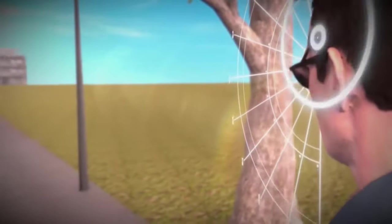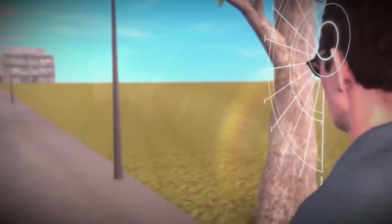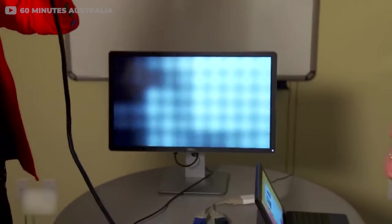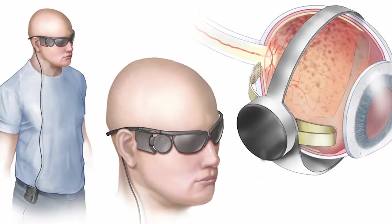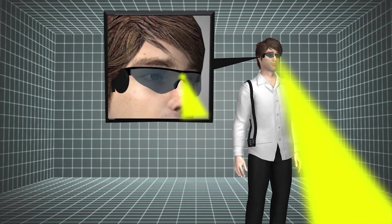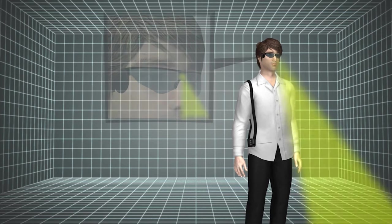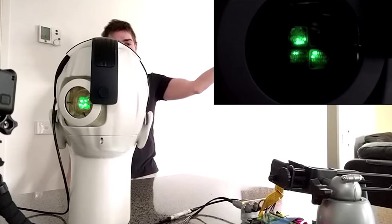At present, the bionic eye will not restore complete vision. Instead, it will allow someone who's blind the ability to see a highly pixelated image that will help them move without any aid. Now let's look at how the bionic eye will function to get a better understanding of how it will help the visually impaired.